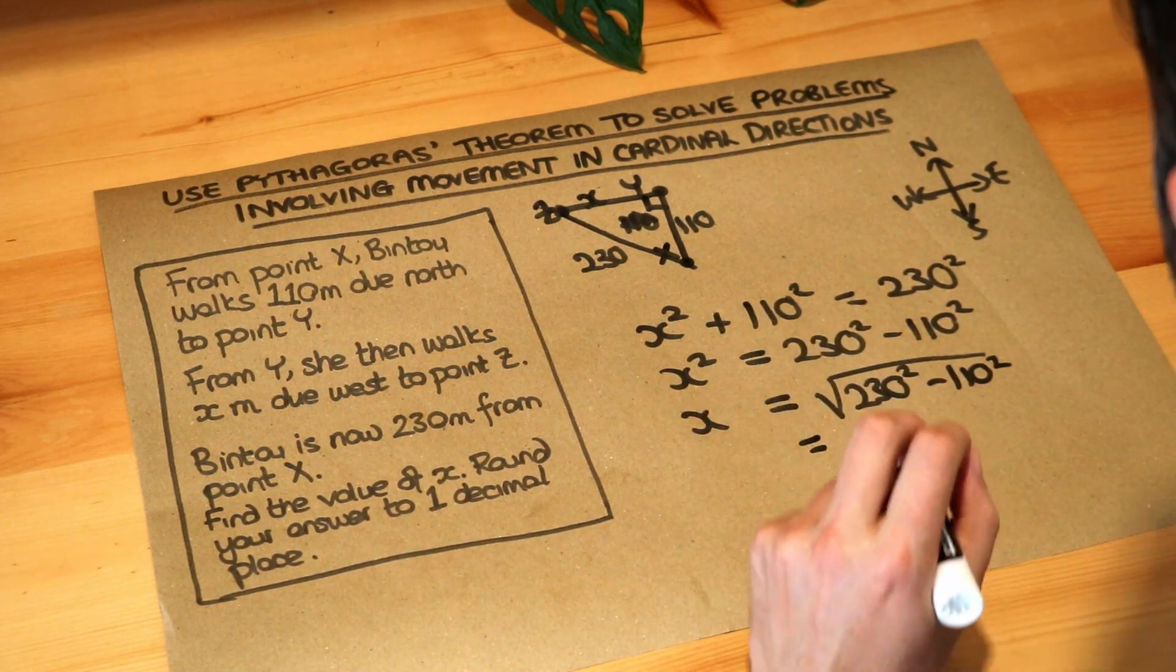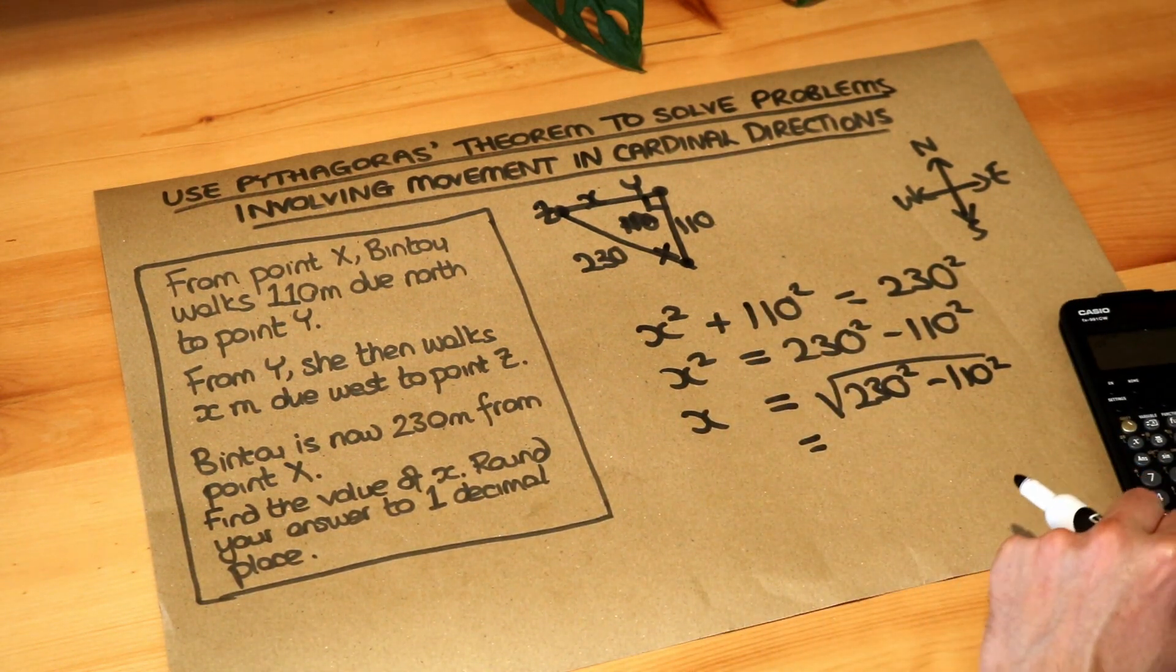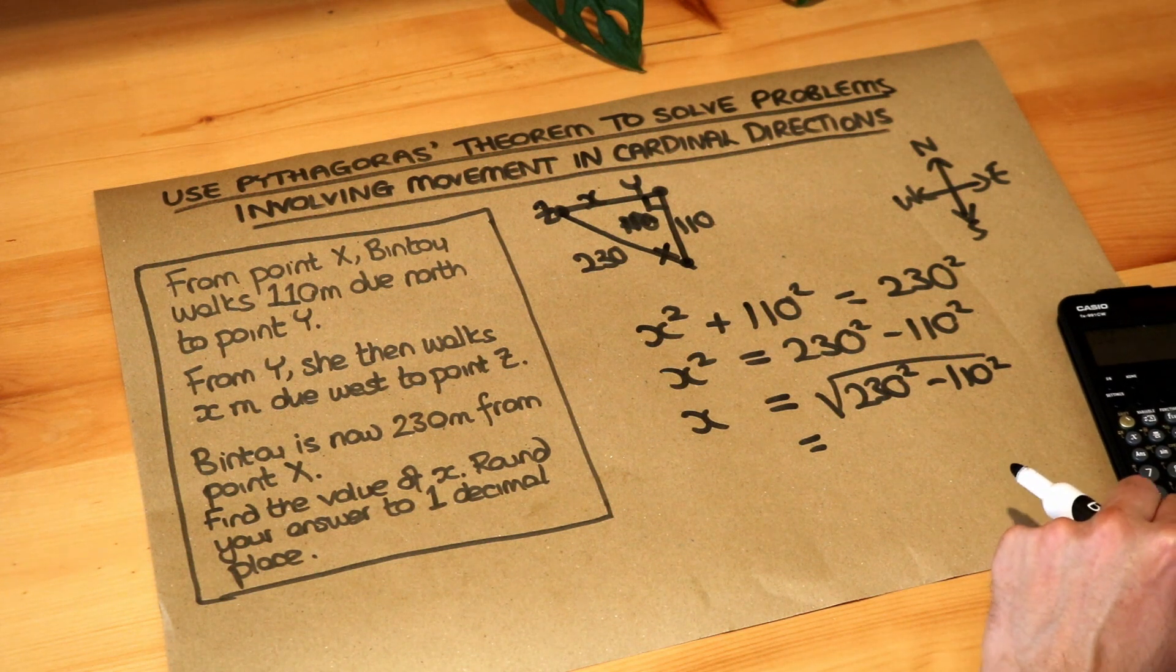So we do that all on a calculator. The square root of 230 squared minus 110 squared.